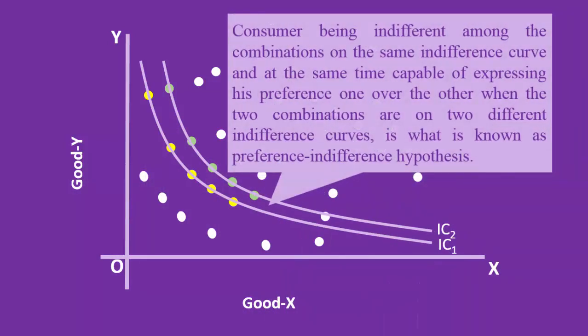Consumer being indifferent among the combinations on the same indifference curve, and at the same time capable of expressing his preference one over the other when the two combinations are on two different indifference curves, is what is known as preference-indifference hypothesis.